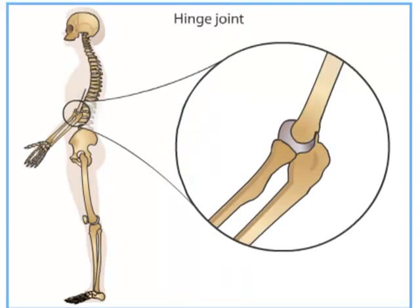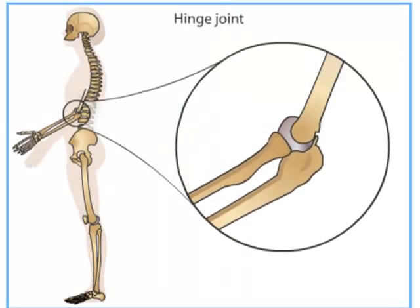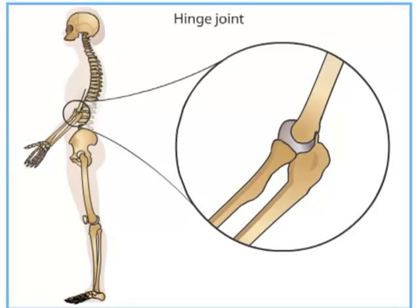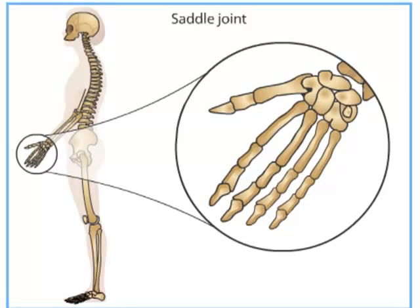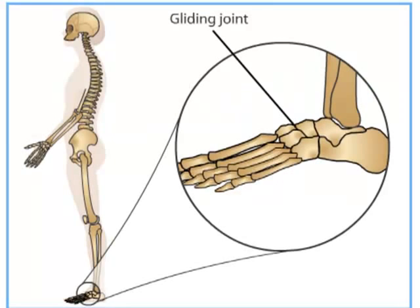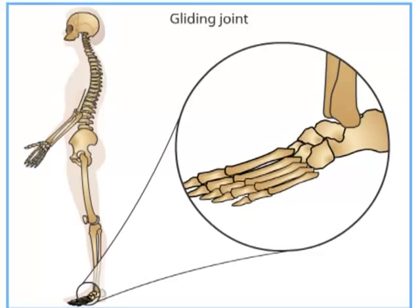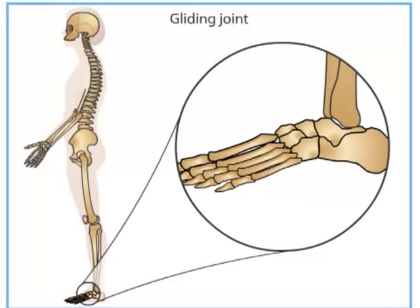An example of a hinge joint is found in the elbow — it allows you to move your forearm forward and backward like a hinged door. Saddle joints are found at the base of each thumb; they allow you to rotate your thumbs and help you grasp objects. Gliding joints allow bones to slide over one another — the joints between the small bones of your foot, which allow your foot to flex when you walk, are gliding joints.